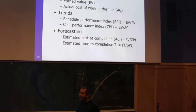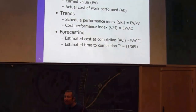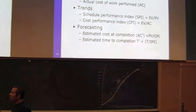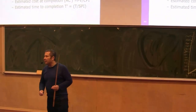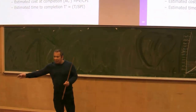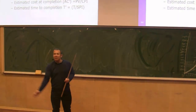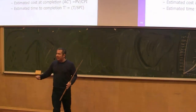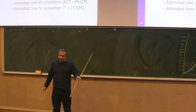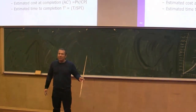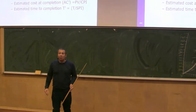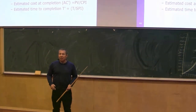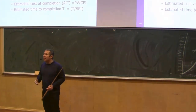Then there is the Earned Value, which represents the value of the work you have produced. For instance, if we are talking about putting boards on a floor, and the plan was to finish 100 square meters, and an expert evaluates that you have only produced 70% of that planned target, then the earned value is 70 square meters. This is one method to calculate earned value.